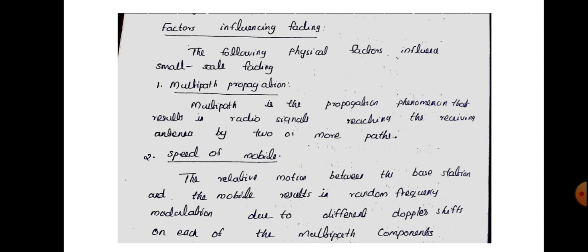Next, what are the factors influencing fading? The following are the physical factors that influence multipath small-scale fading. The first is multipath propagation — that is, multipath is the propagation phenomenon that results in the radio signals reaching the receiving antenna by two or more paths. The main factor that influences fading is multipath propagation.